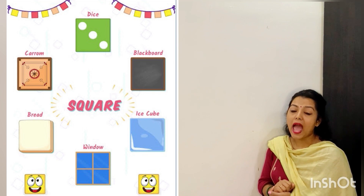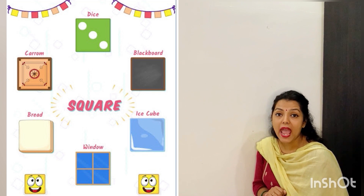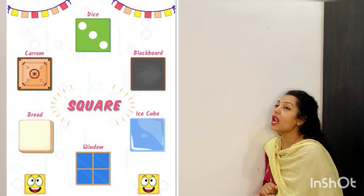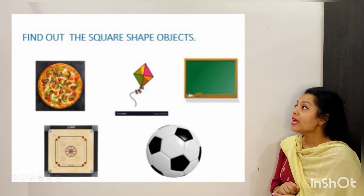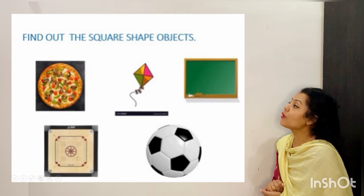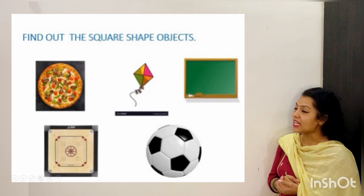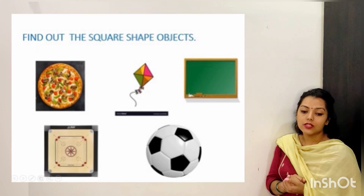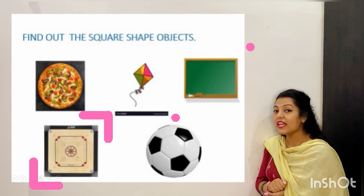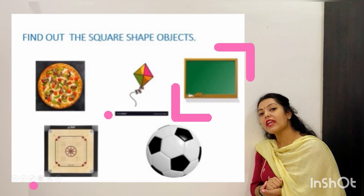Carom, blackboard, ice cube, bread and a window — these all are of square shape. Now there are some shapes again. Can you guess out of these shapes which are square in shape? Yes! The square shapes are carom board and green board. Yes! We have square shape — carom board and green board.